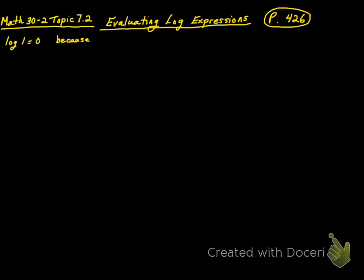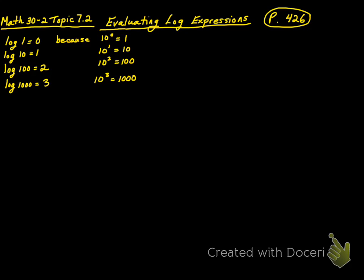The log of 1 is equal to 0 because 10 to the power of 0 is equal to 1. The log of 10 is equal to 1 because 10 to the power of 1 is equal to 10. And the log of 100 is equal to 2 because 10 to the power of 2 is equal to 100. Log of 1,000 is equal to 3 because 10 to the power of 3 is 1,000. As you can see, logs are exponents. So the rule is: y equals log base 10 of x, and x is equal to 10 to the power of y.